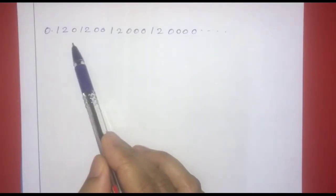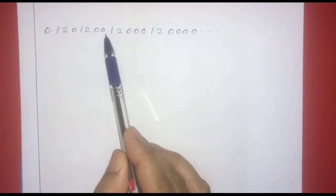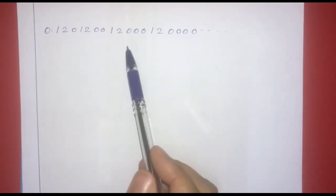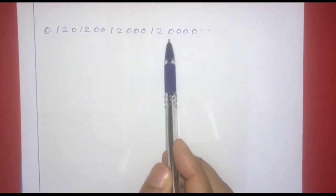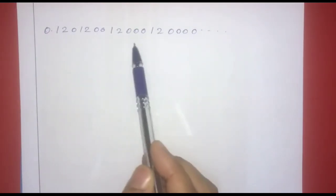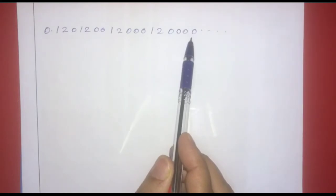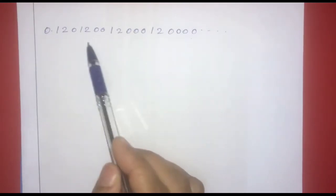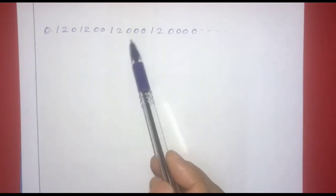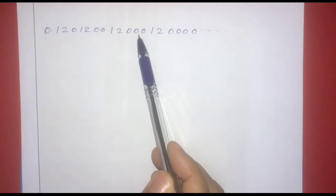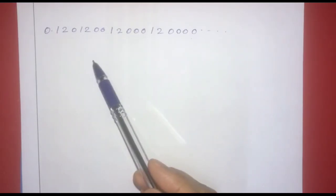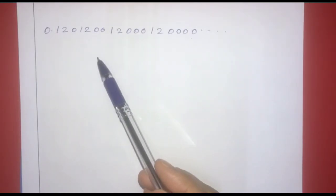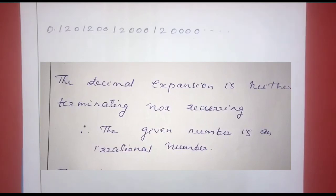The second number is 0.120120... and so on, where the pattern does not repeat in a fixed cycle and is non-terminating. The decimal expansion is neither terminating nor repeating. Therefore, the given number is an irrational number.